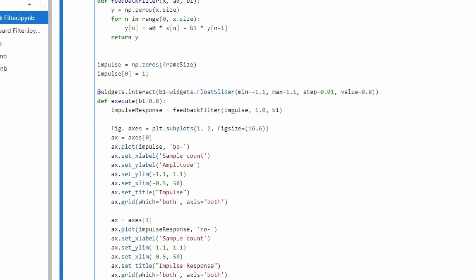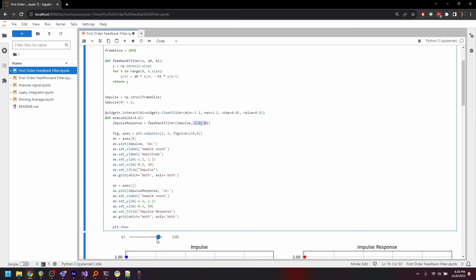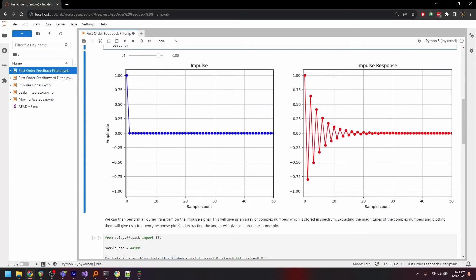Now if we pass an impulse signal through this function, with a0 as 1 and b1 as whatever the value of this slider is, we get an impulse response that looks like this. For an impulse signal, which is just a single flick of an input, we get an oscillatory response when b1 is positive, and these oscillations decay exponentially.